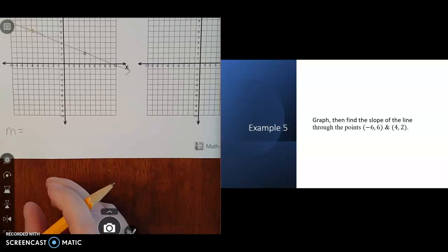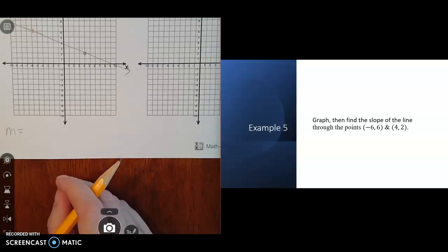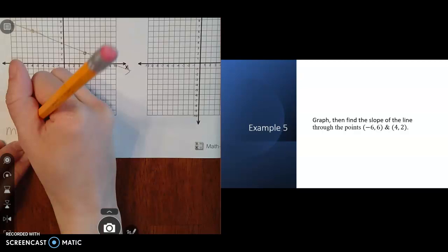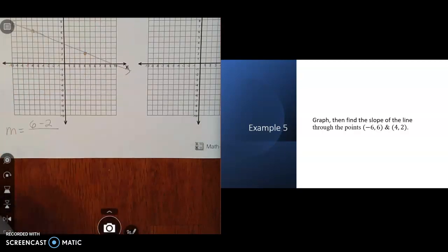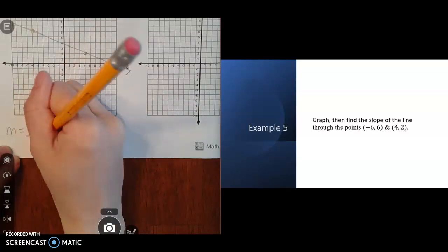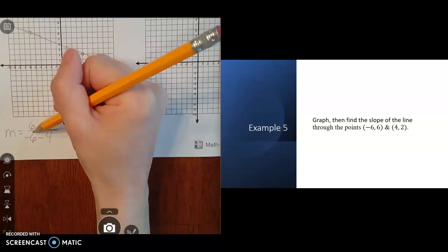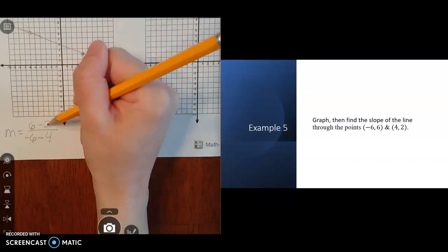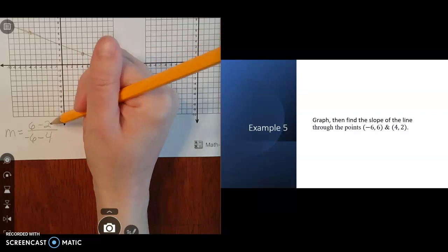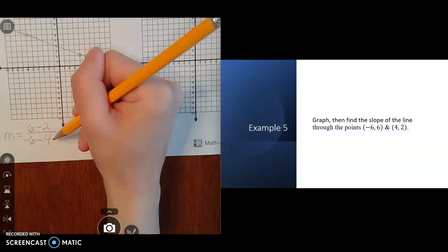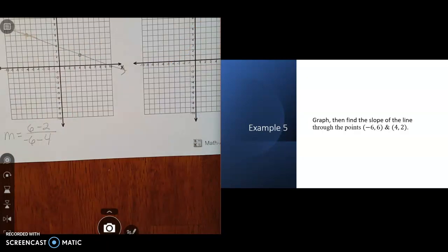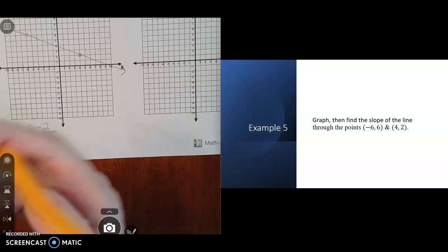I know it said y2 minus y1, but I like things being positive, so I'm going to do my first one minus my second one: 6 minus 2. Since I started with the first coordinate, I need to do negative 6 minus my second x-coordinate, which is 4. Notice the 6 and negative 6 are part of the same coordinate, and the 2 and 4 are from the same coordinate. I have my y values on top and x values on the bottom. I'm subtracting them. I know we just did midpoint where we added them, but in slope we subtract because we're looking at the difference, the change.